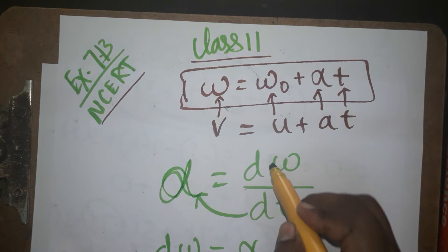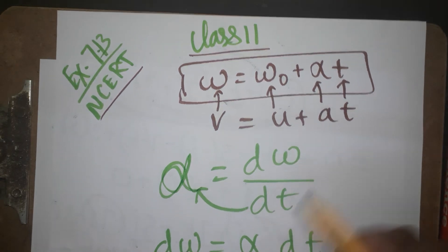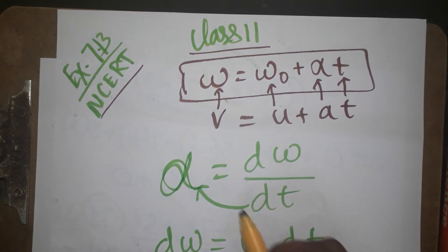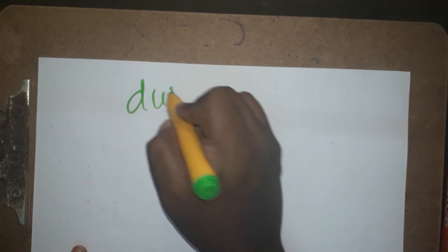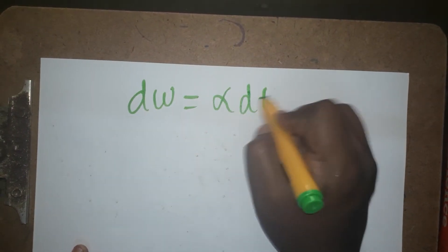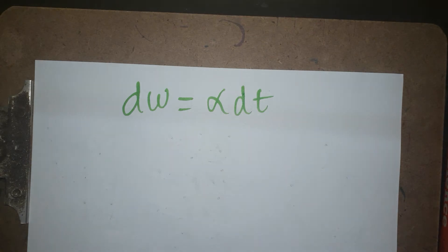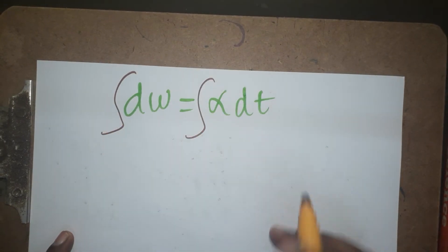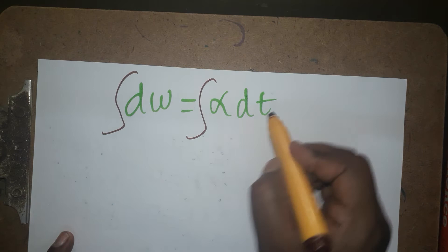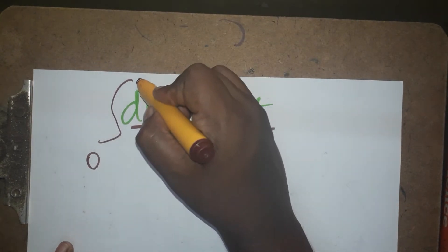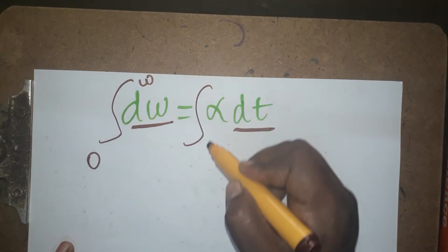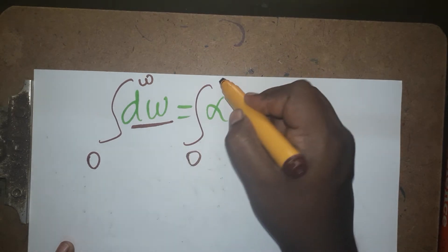I have taken angular acceleration equal to the rate of change of angular velocity with time. Rearranging, d(omega) equals alpha times dt. This is the first NCERT method. Now integrate on both sides — here time is a variable and angular velocity is a variable. Start from 0 to final velocity on one side, and 0 to time t on the other side.